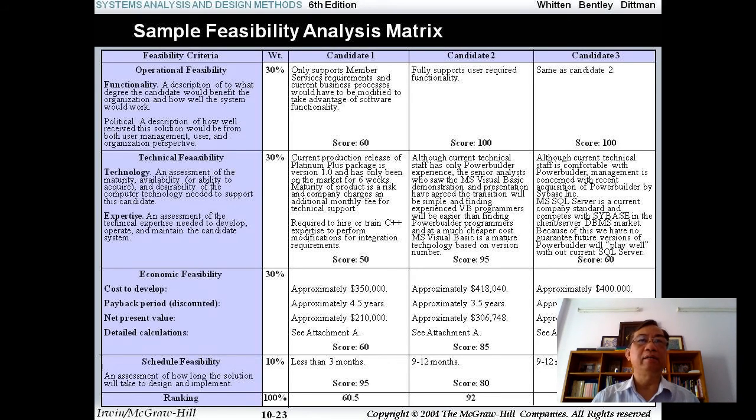When you analyze many aspects, I mean the operational feasibility, technical feasibility, etc., you can make a sum. The total ranking: candidate one is 60.25, candidate two is 92, and candidate three is 85. So the best one is candidate two.